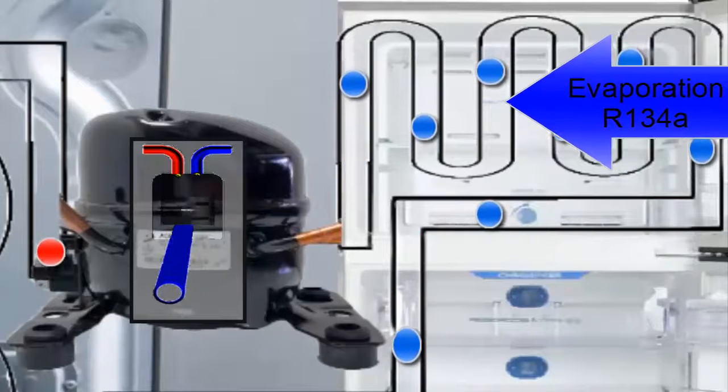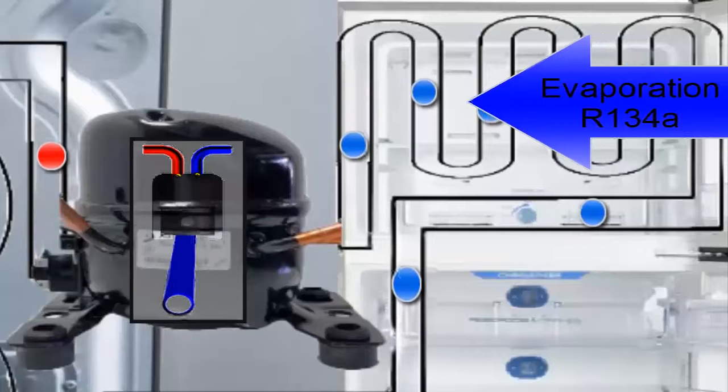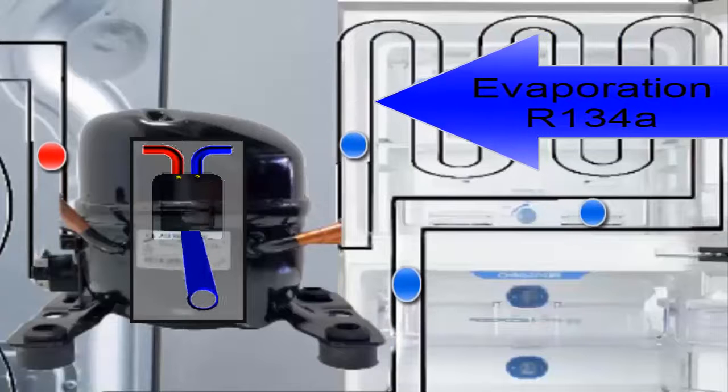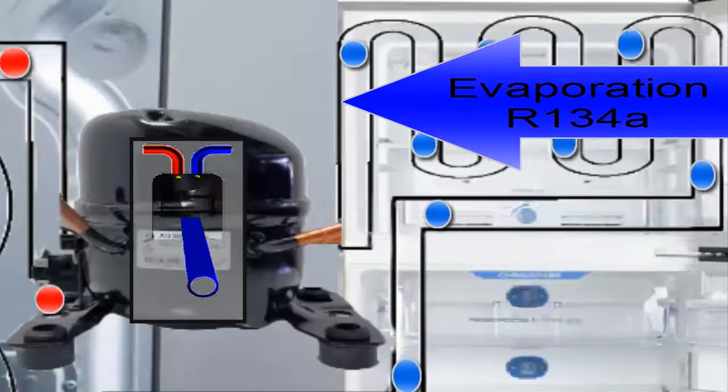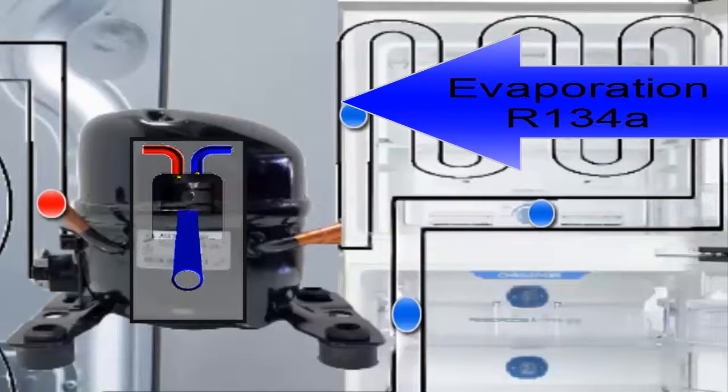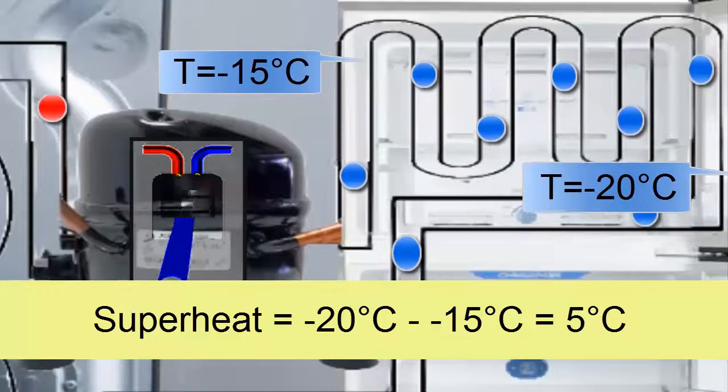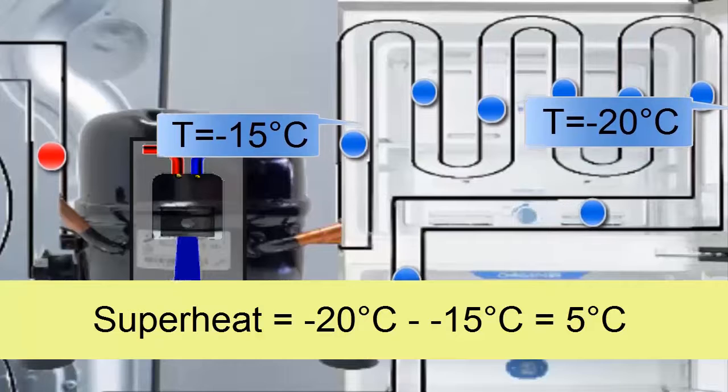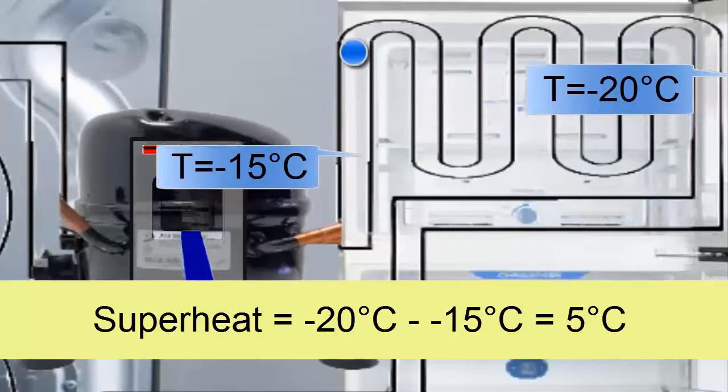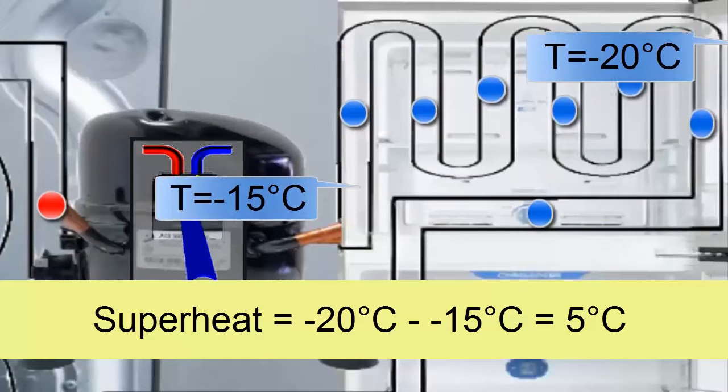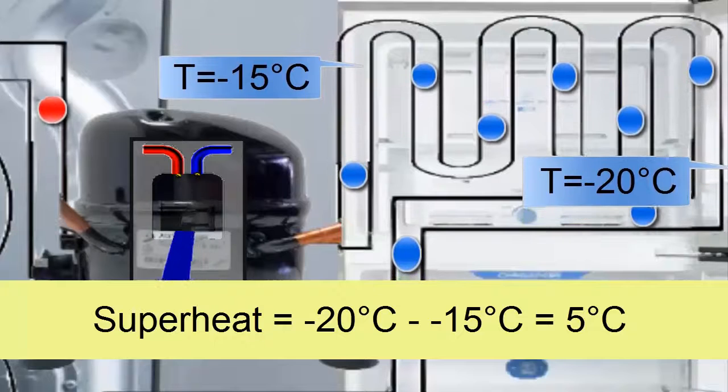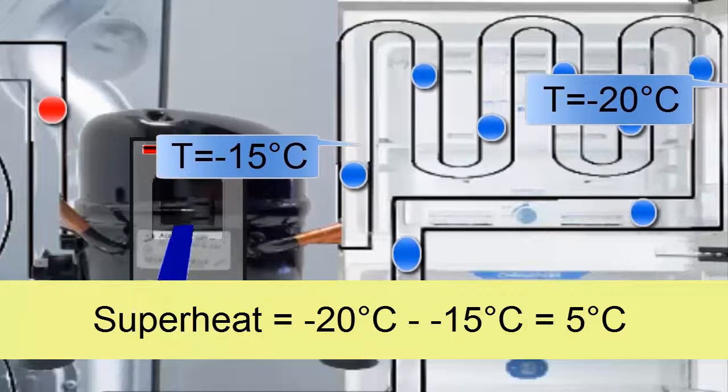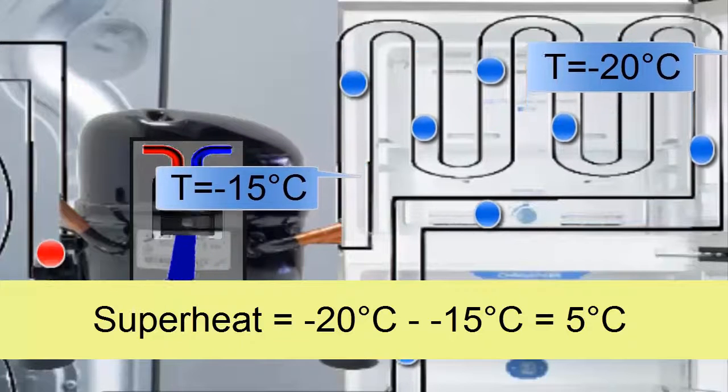The R134A, now in a gaseous state and with a slight temperature increase called superheating, is suctioned by the compressor. For this case, let's assume that the temperature of the R134A refrigerant in a gaseous state is minus 15 degrees Celsius. This means that the R134A refrigerant goes from minus 20 degrees Celsius to minus 15 degrees Celsius, so in this equipment, the superheating is 5 degrees Celsius.